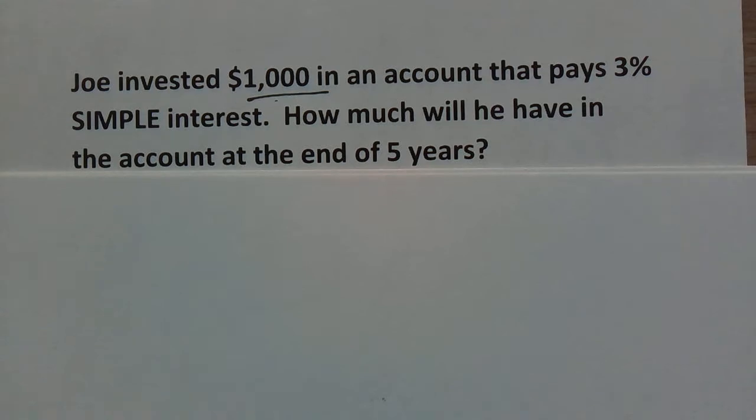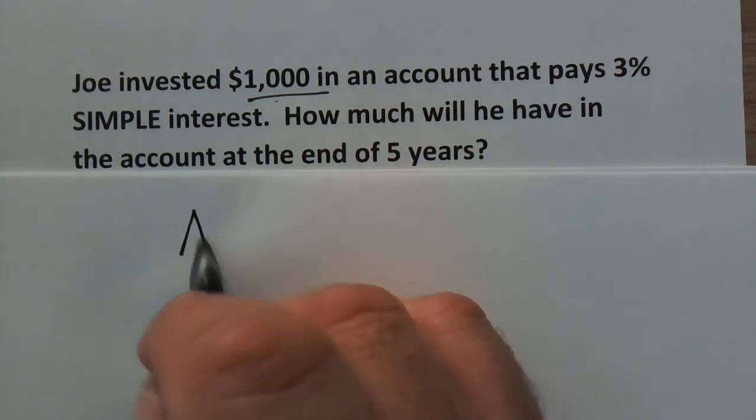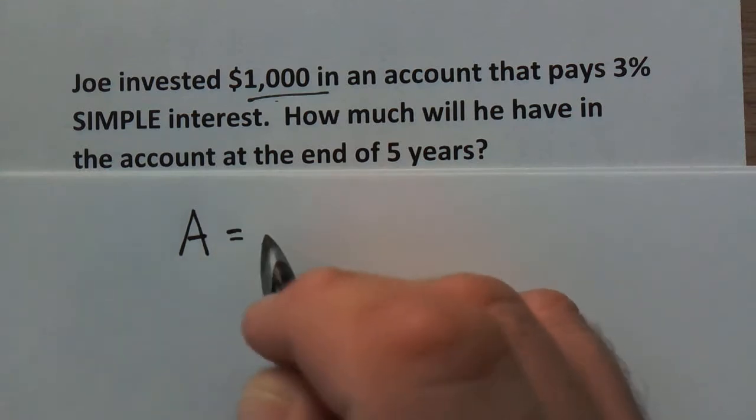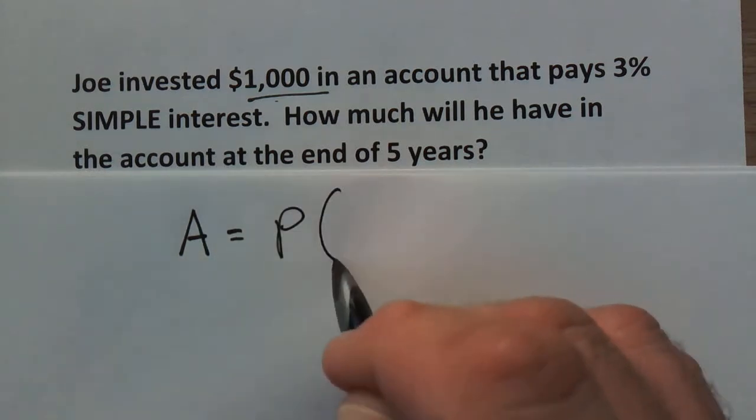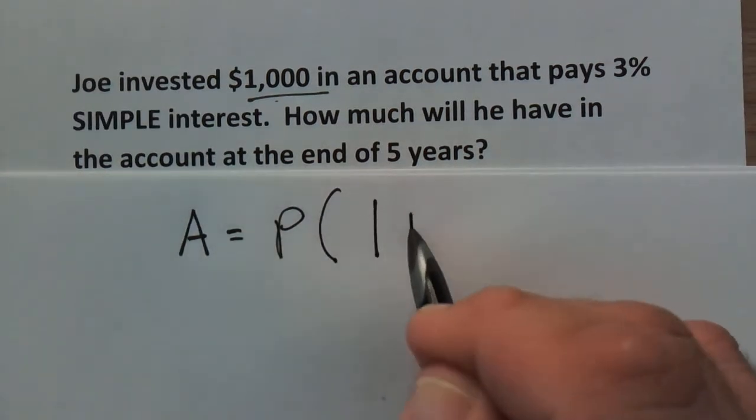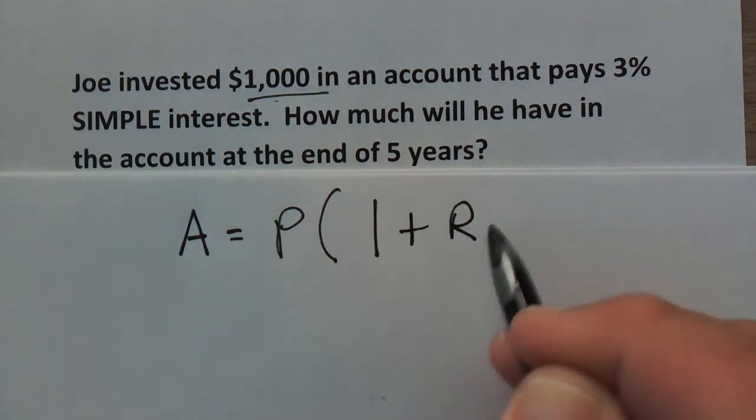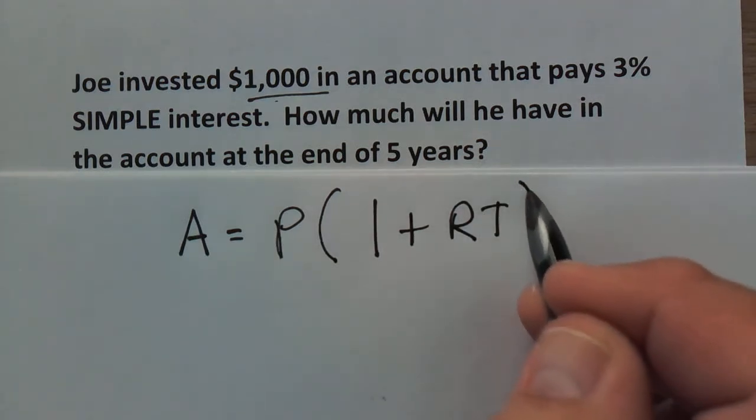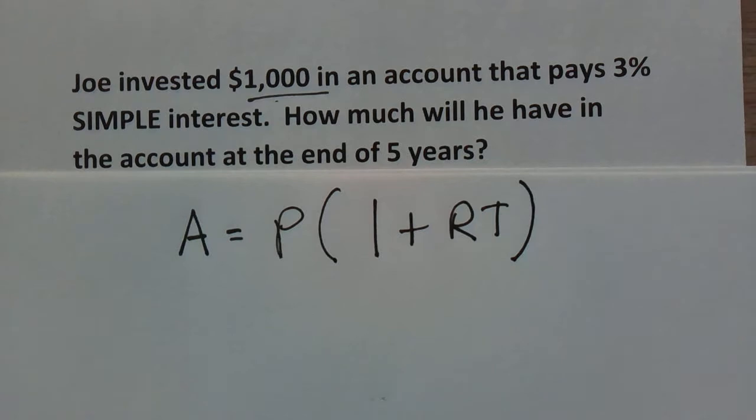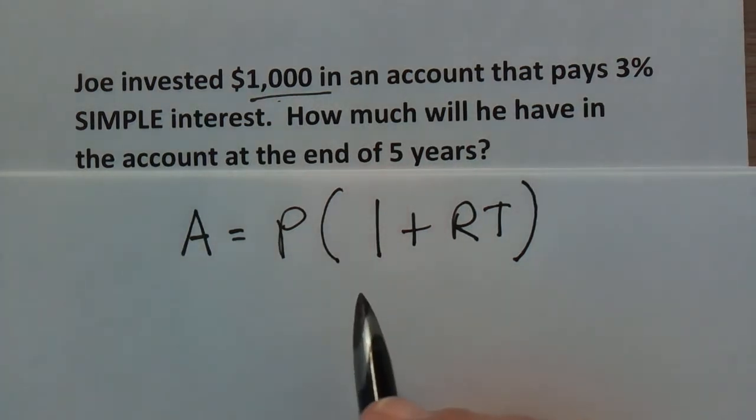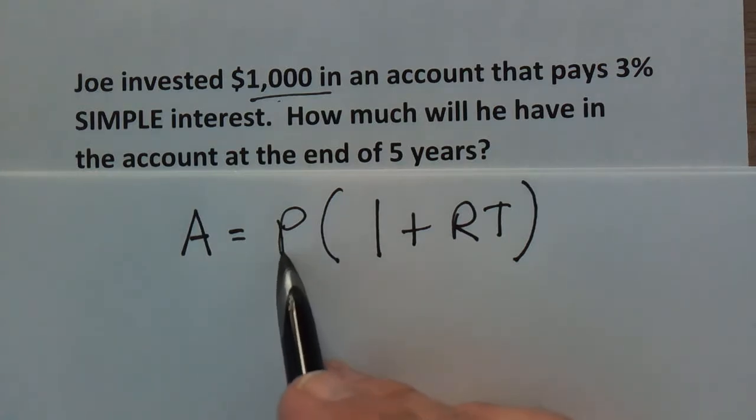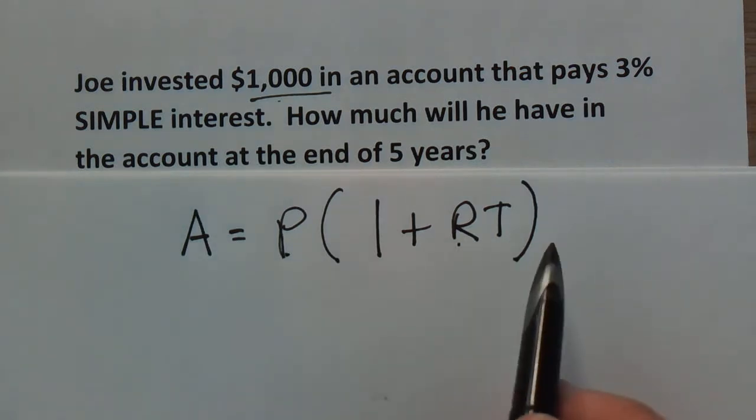Same facts but we're going to use a slightly different formula. This formula is A equals P times parentheses one plus RT close parentheses. One good thing about this formula is it's going to be a little bit more similar to the one you're going to use for compound interest. So everything is going to be the same - P is the principal, R is the rate, T is the time.